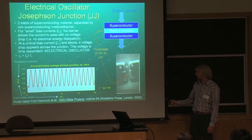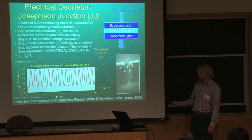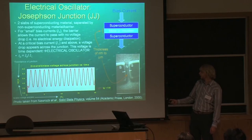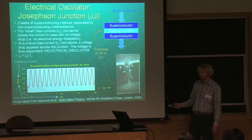As this shows down here, this little IV is a ratio of bias current to critical current — so this is five times. As you can see, it oscillates with time across the junction.